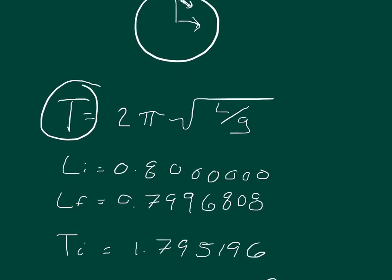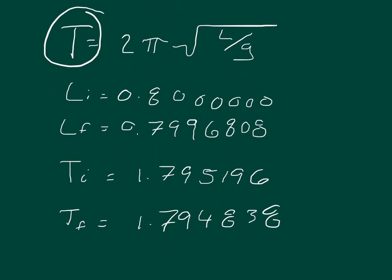And so you plug those numbers into this equation and what you'll get is that with the initial length, the time took 1.795196 seconds for each swing from side to side. And then it took a little bit less time. You can see that the 5 changed to a 4. It took a little bit less time whenever it shortened. So the clock would actually speed up. It would go faster.